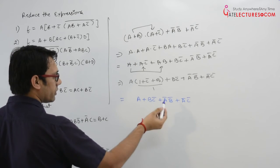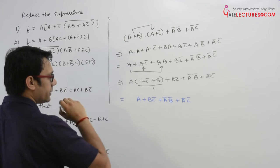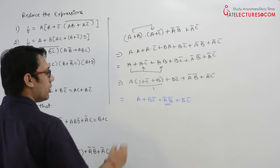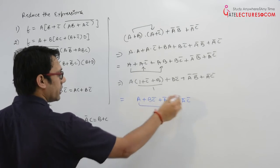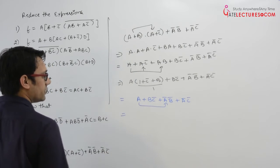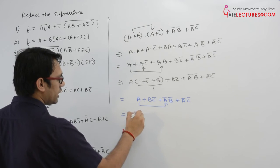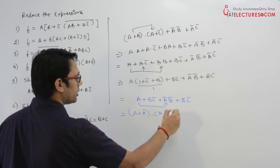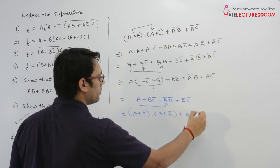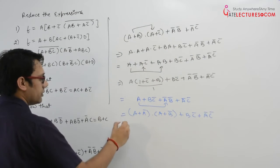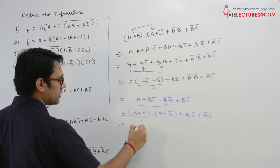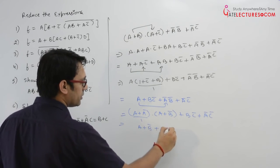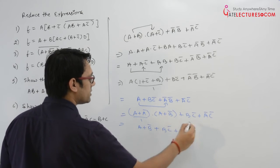Now you can take any one of these two expressions. This expression is not having c. The better way is to distribute a between this and a with this. So let us distribute a with this. It can be written as (a plus a complement) dot (a plus b complement) plus bc complement plus a complement c complement. Further, this can be written as 1, so it is a plus b complement plus bc complement plus a complement c complement.